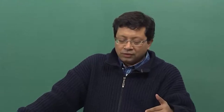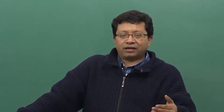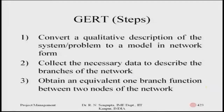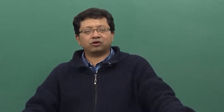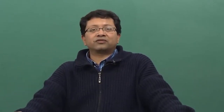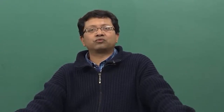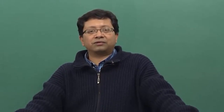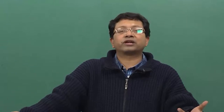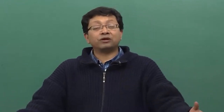So let us consider these points and continue our discussion on GERT. What are the steps in the GERT? The first step is to convert a qualitative description of the system problem to a model in the input form. Based on the information available, you convert it into a logical set of inputs and outputs, combining them with nodes connected by arcs. The arcs represent exclusive OR, inclusive OR, and AND operators, and looping is also considered.